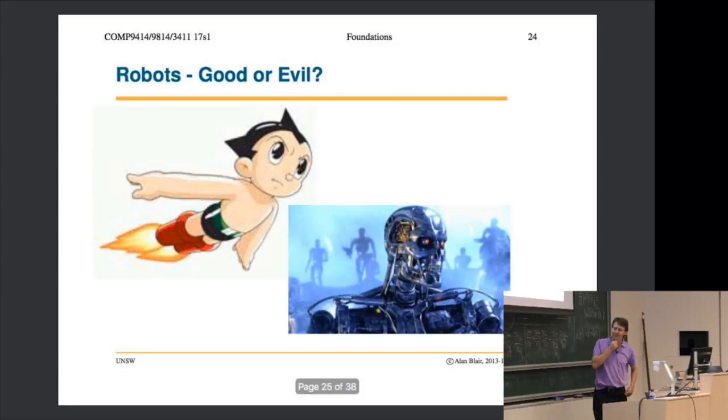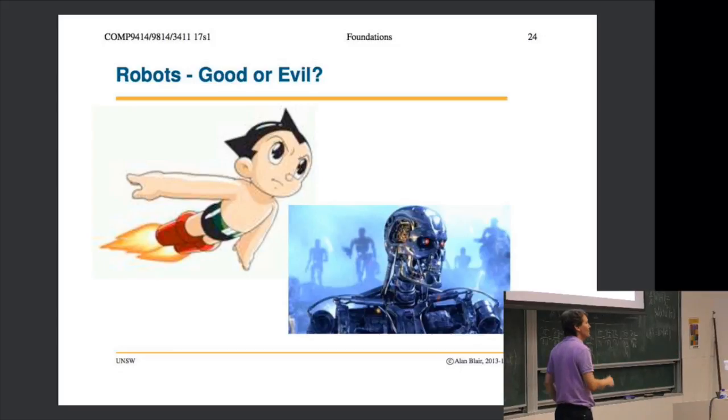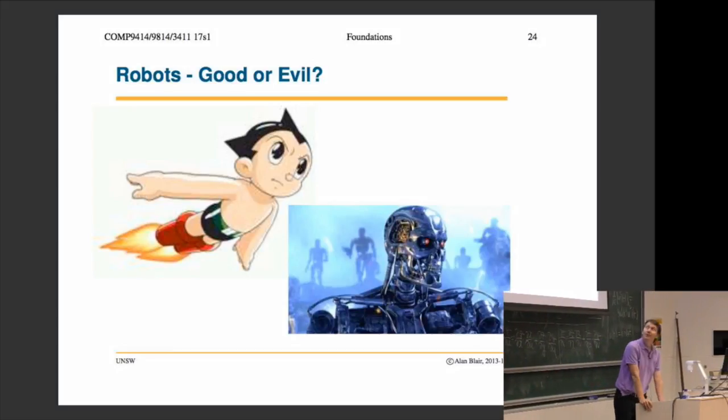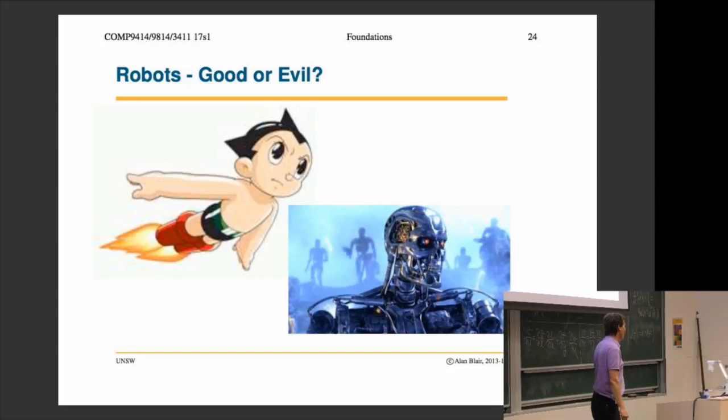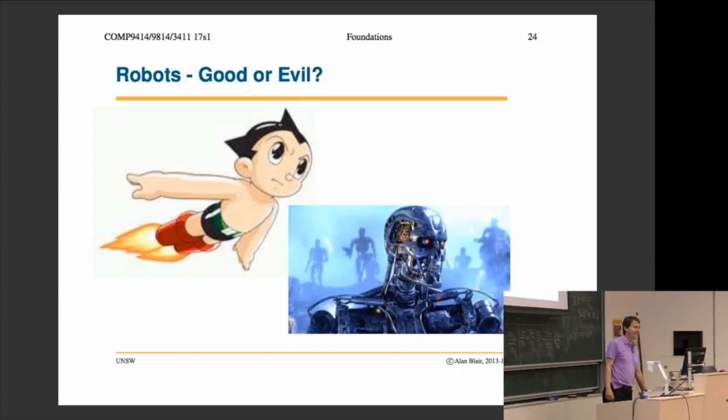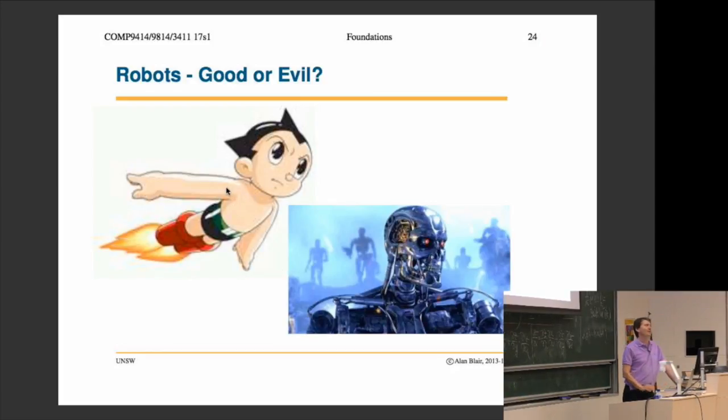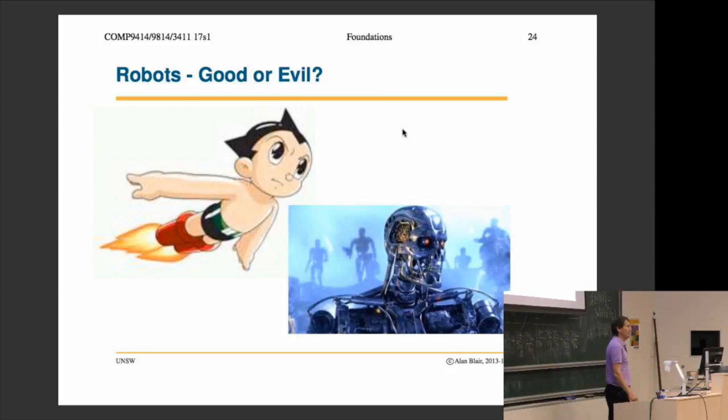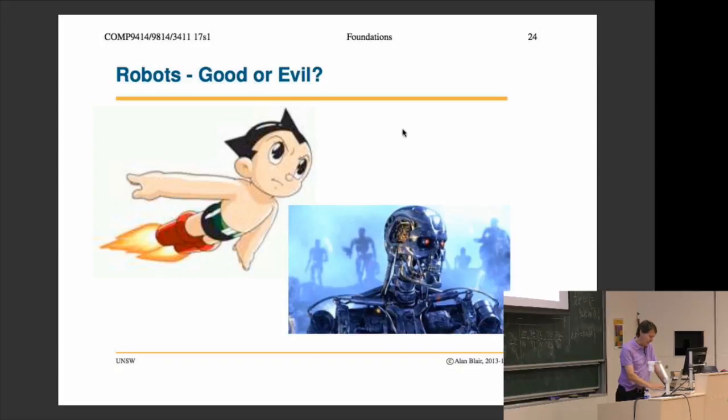What's interesting is if you compare attitudes to artificial intelligence and robots in different cultures. People have done studies where they ask people their general attitude towards robots and ask them to name some robots. In Western culture, people tend to name the Terminator - this general attitude that robots are out to destroy us. Whereas in Japan and Korea they name Astro Boy and Gundam, and they have a generally positive attitude - robots are nice and they're here to help us. There's this very interesting cultural divide.